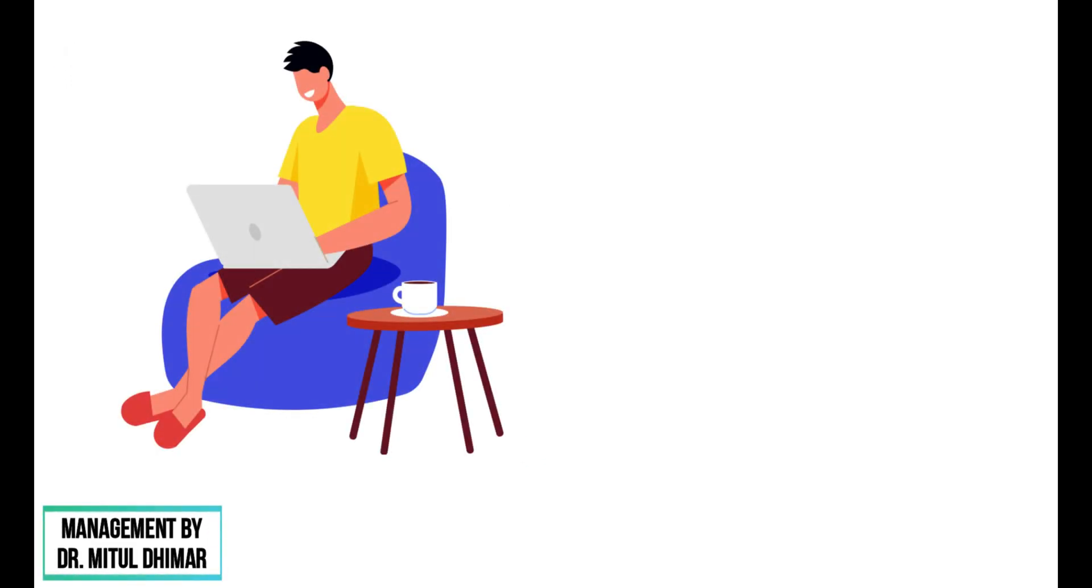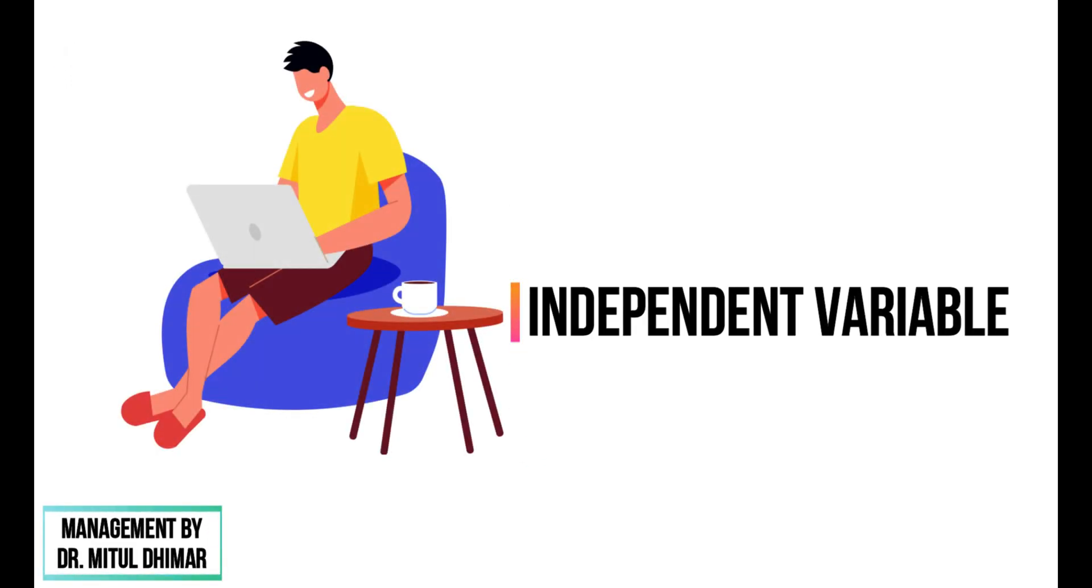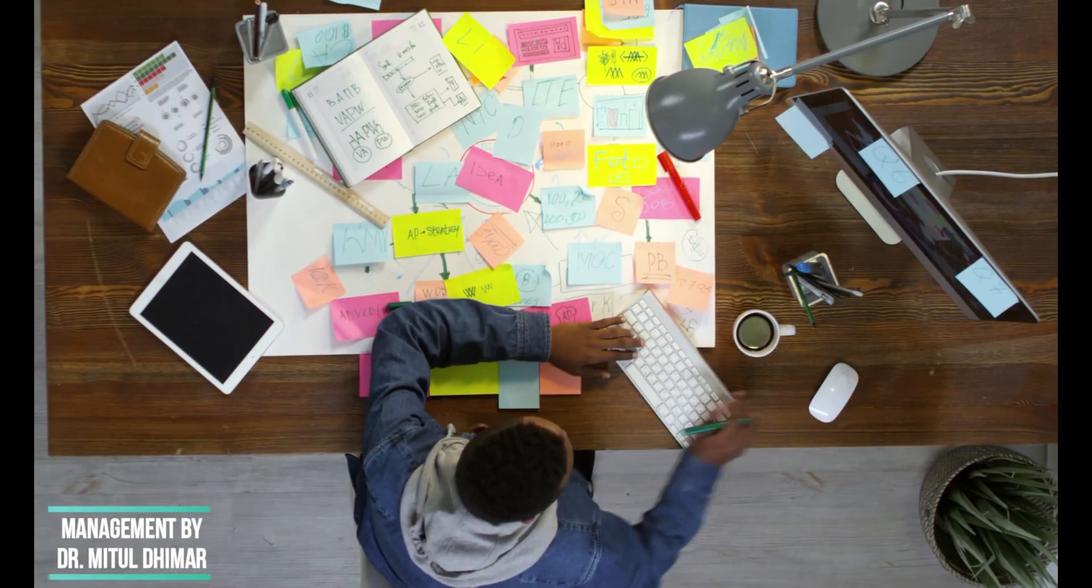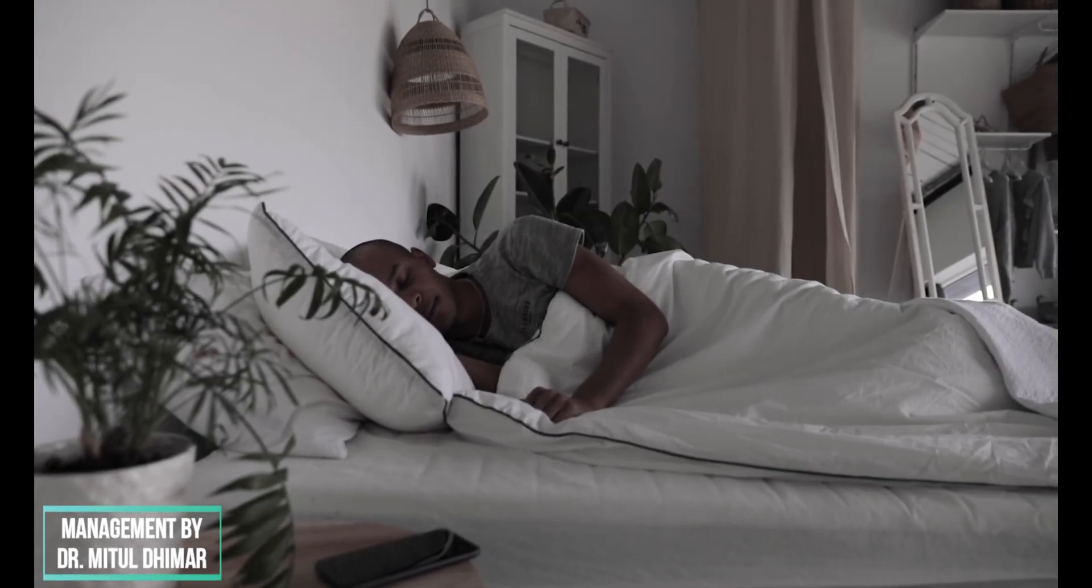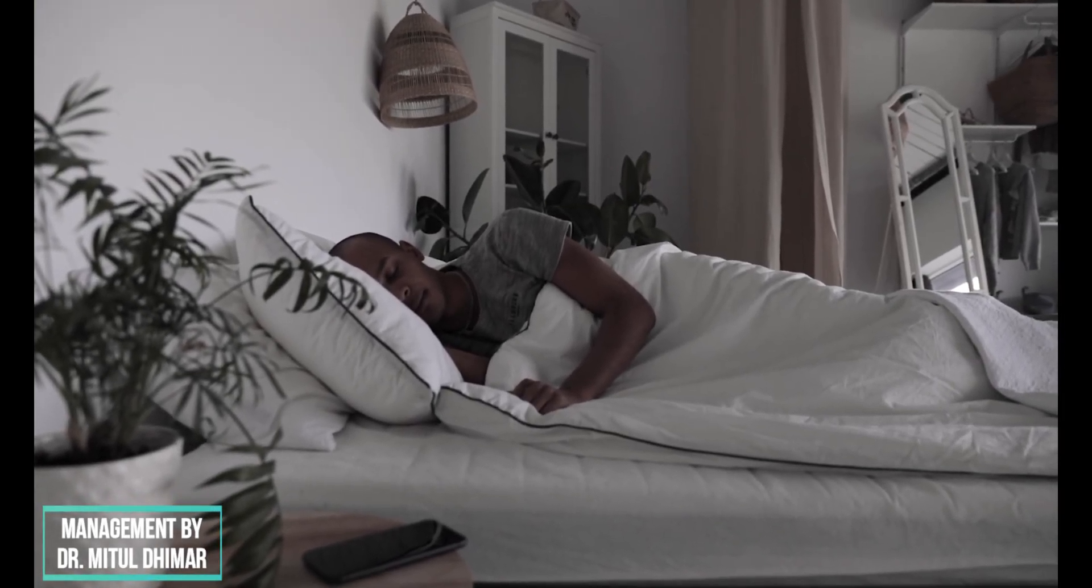For example, providing two off days in a week, that is the independent variable, can increase the work efficiency of the employee, that is the dependent variable. Another example is getting at least eight hours of sleep can make people more alert.